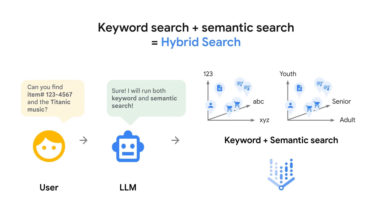That's where hybrid search comes in. By combining the power of semantic search with traditional keyword search, you can get the best of both worlds. Semantic search can handle nuanced, contextual queries, while keyword search can effectively capture those specific, out-of-domain terms. This hybrid approach ensures a more comprehensive and accurate search experience.